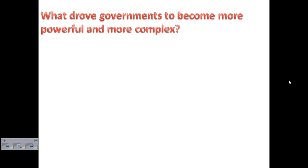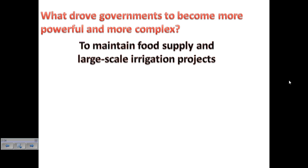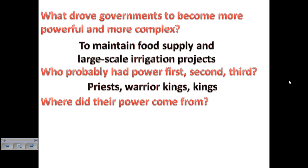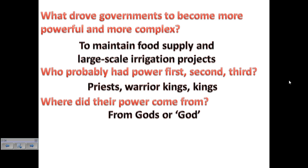What drove governments to become more powerful and complex? As there were more people, you had to maintain a large food supply, requiring large-scale cooperation — things like large-scale irrigation projects and granaries where people keep food for the winter. Who had power first? The answer is probably priests, then warrior kings, then kings. These were high priests — high-powered individuals with access to the polytheistic gods. People believed that these priests and kings had a special connection with the gods, and that's where their authority came from.